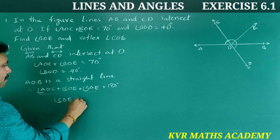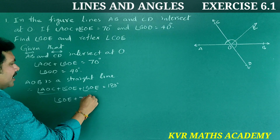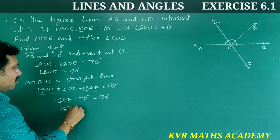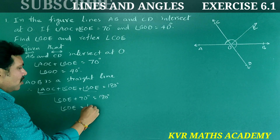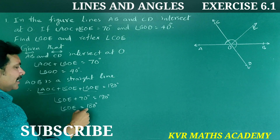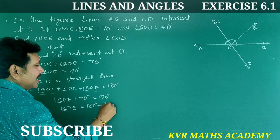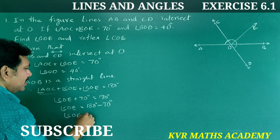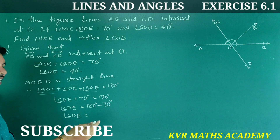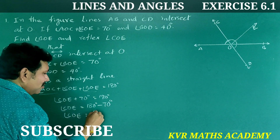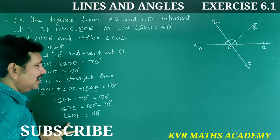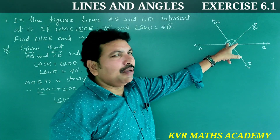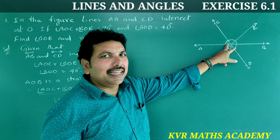So, angle COE plus 70 degrees is equal to 180 degrees. Therefore, angle COE is equal to 180 minus 70, which is 110 degrees. Angle COE is equal to 110 degrees.